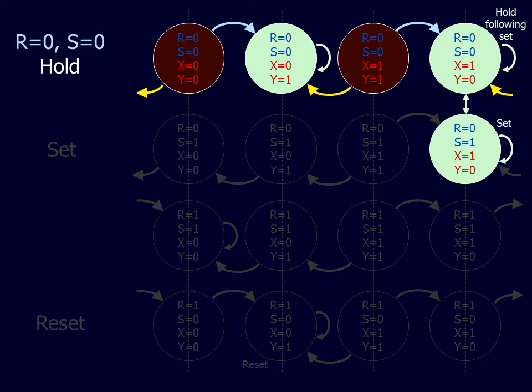This is essentially a 1-bit memory function. The ensuing R equal 0, S equal 0, X equal 1 state can thus be called a hold following set.